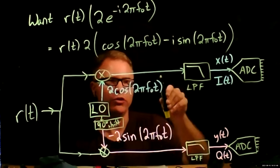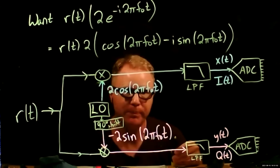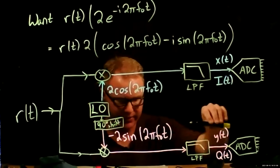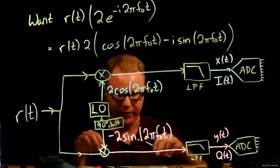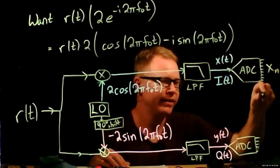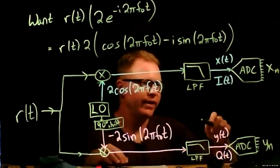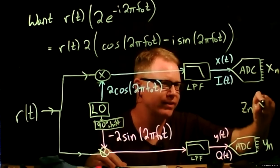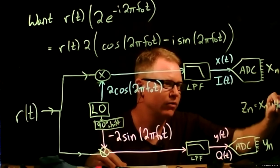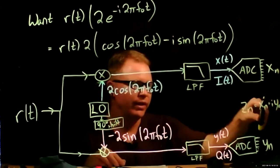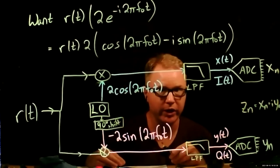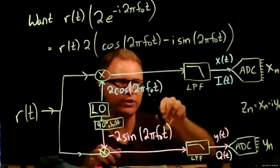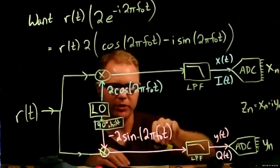Just like you do a complex multiply by keeping track component by component, here we're doing an analog multiply and an analog low-pass filter on two separate paths. The data that comes out is sampled data: x_n and y_n. You can think of the data the SDR returns as z_n = x_n + i y_n. Every complex number you get — which you can manipulate with GNU Radio blocks or Python code — is this combination of a sample from the first path multiplied by cosine and a sample from the lower path multiplied by minus sine.